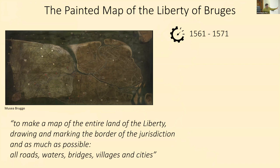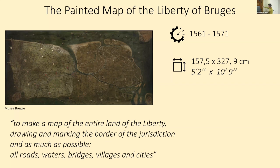The Liberty ordered the map and wanted it to show the border of the entire Liberty, the jurisdiction, and as much as possible the roads, the waters, the bridges, the villages, and the cities. It was commissioned in 1561, and Pieter Purbus spent 10 years making the map. It's a pretty large map — the reproduction shown here is more or less one quarter of the real map — combined with a large scale.